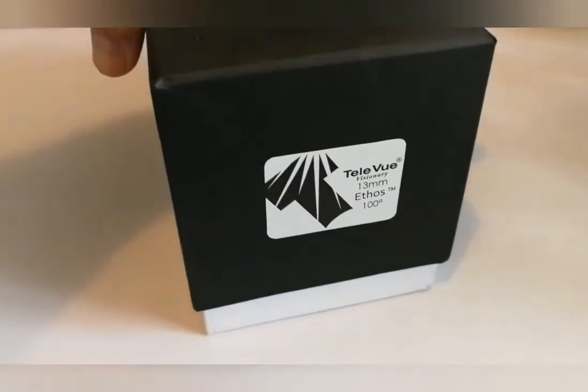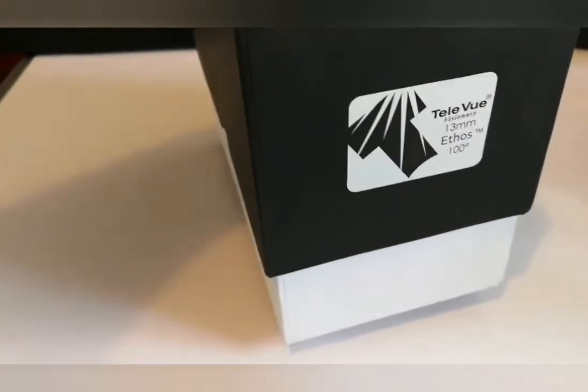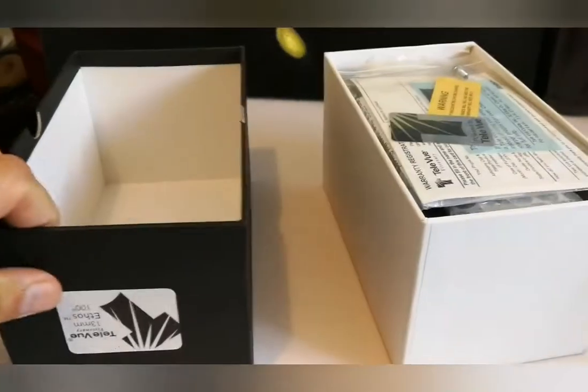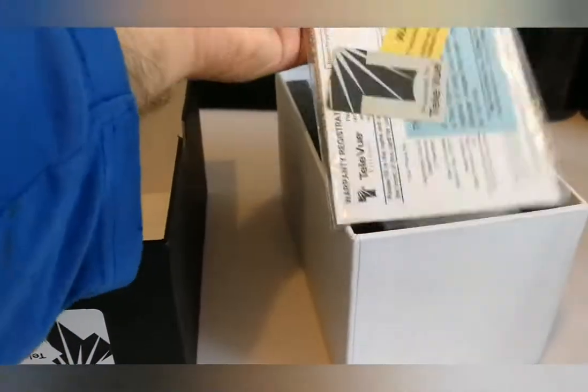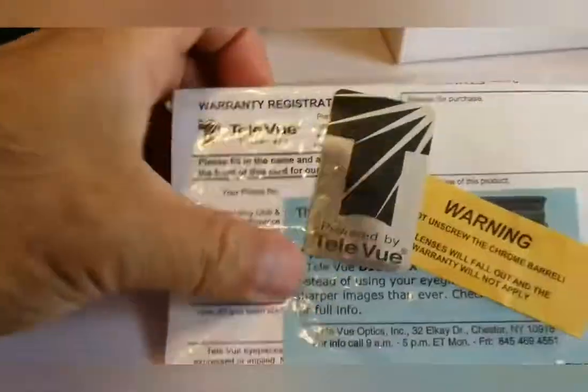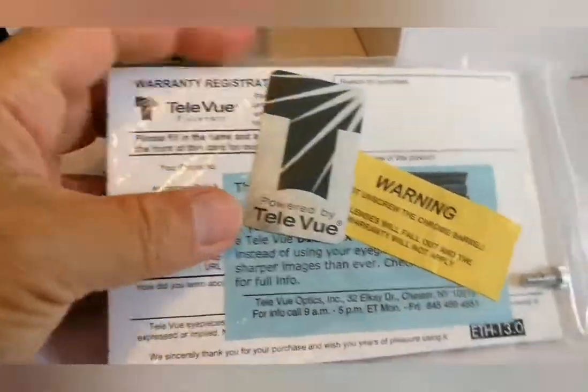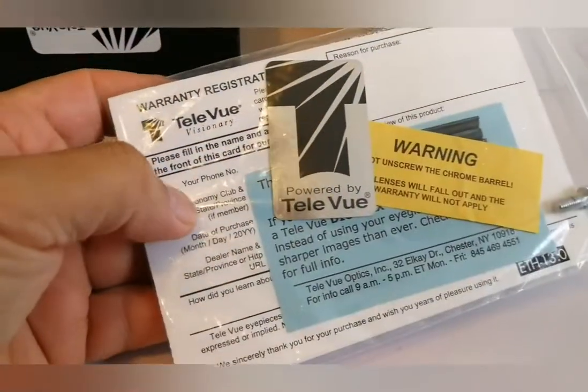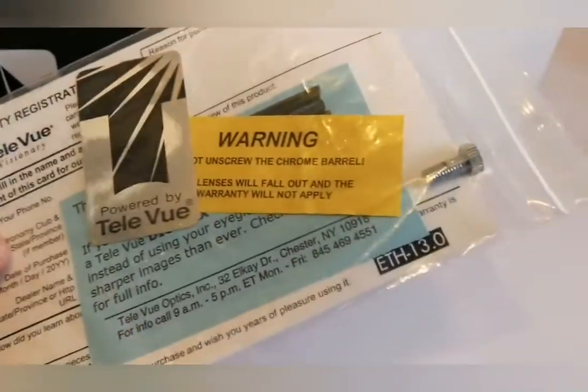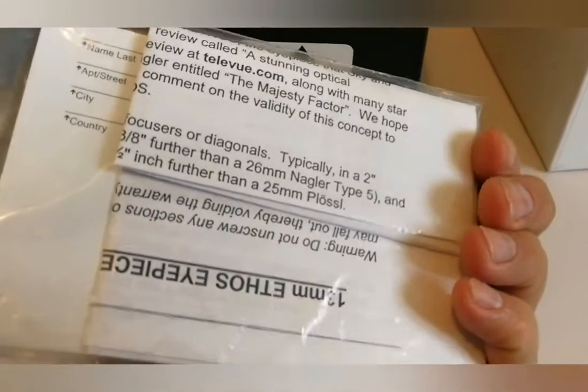Teleview Ethos 13mm. Probably one of the best ethos. It comes with a Teleview label, warning card, screw, and a document for it.